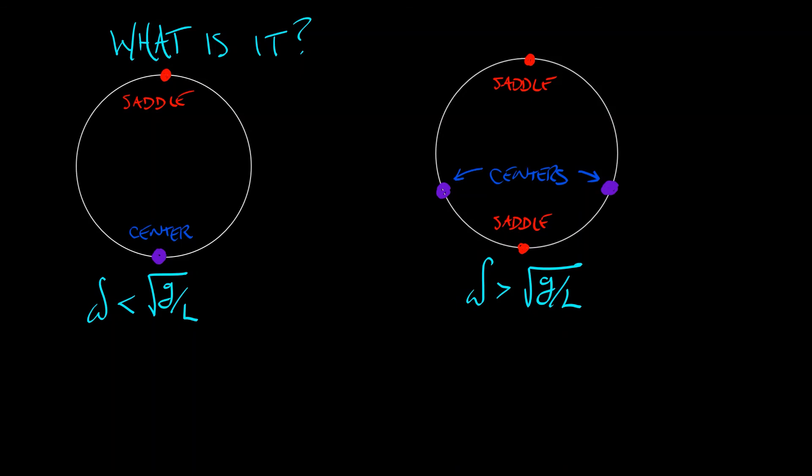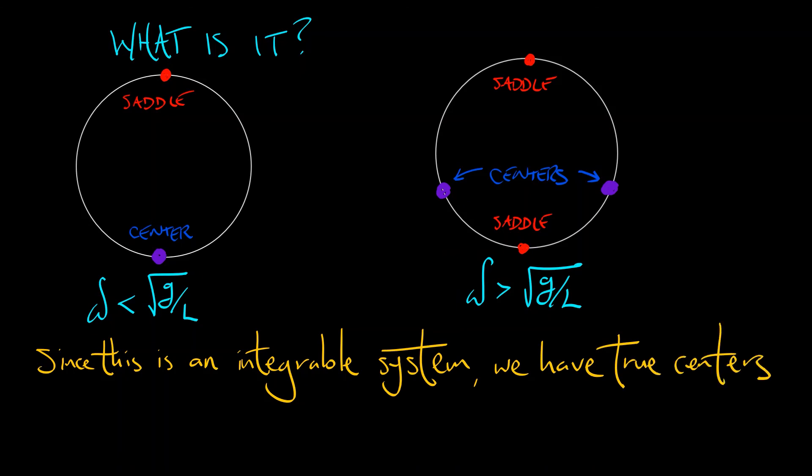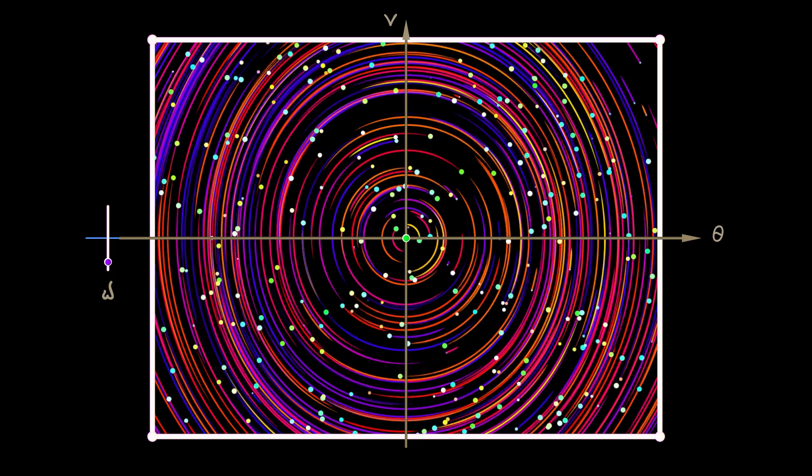Now this is a little bit unusual in that this is an integrable system so that these are true centers emerging from this saddle. Nevertheless, this is still following the pattern of having a single equilibrium change its type while emitting a pair of similar equilibria off to the side. Because of the stabilities involved here, this is going to be a supercritical pitchfork bifurcation.